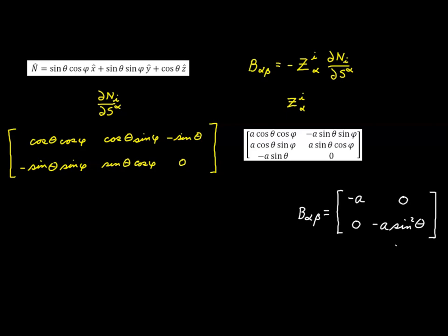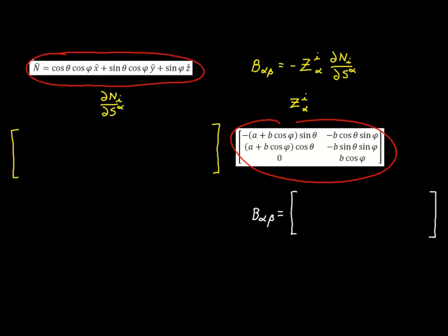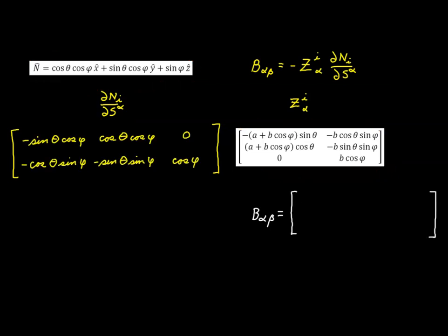Finally, we move on to the torus. For the torus, this is our shift tensor and this is the normal. We start by filling out the six elements of the matrix. Each of the three elements in the first row are the partial derivatives with respect to theta of n1, n2, and n3, and the second row gives the partial derivatives with respect to phi of n1, n2, and n3.